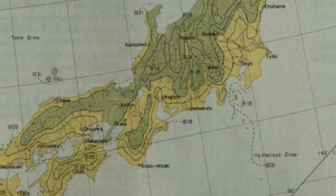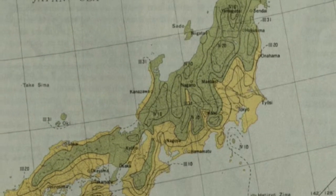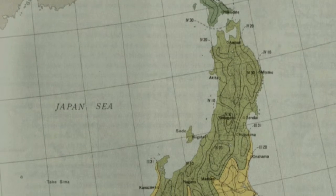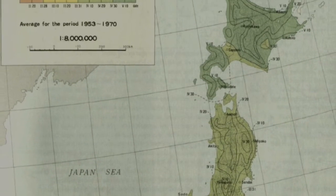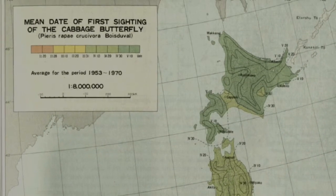It's like the contours in a topographical map. So I like the first sighting of the cabbage butterfly. It's so bizarre. I think the students liked it too.